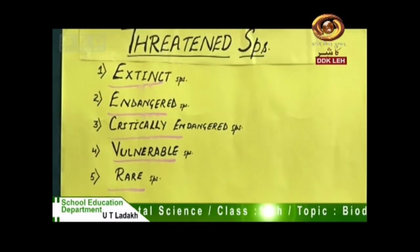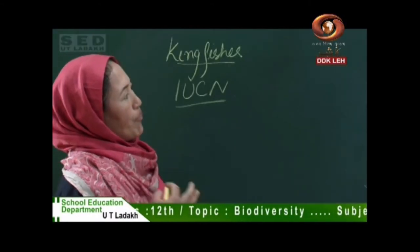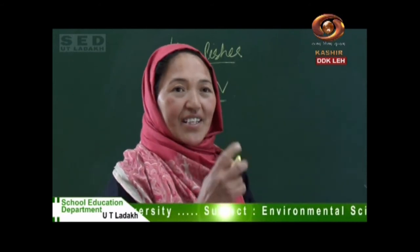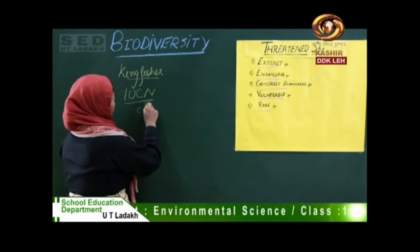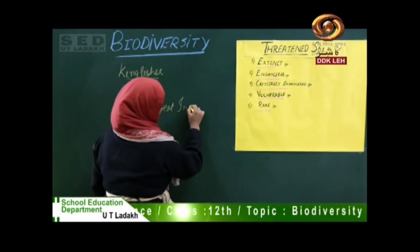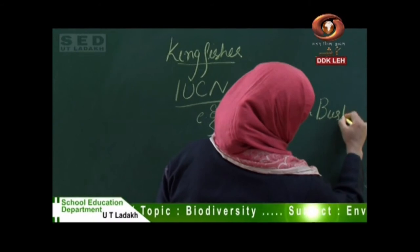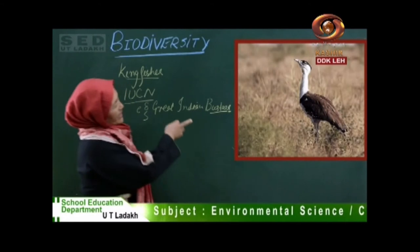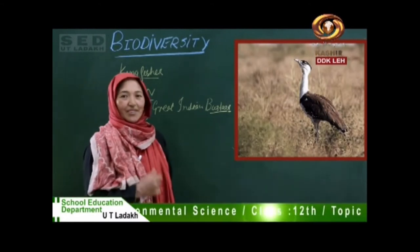Third is critically endangered species — those species whose population has decreased by eighty percent over three generations. For example, the Great Indian Vulture found in Rajasthan is a critically endangered species.